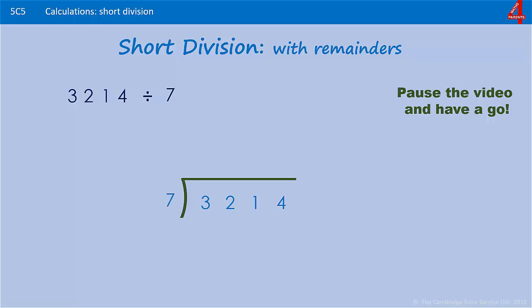3214 divided by seven. 7s into three doesn't go, we put a zero. 7s into 32: 4 lots of 7 is 28 and that leaves us with 4. 7s into 41, now this is a tricky one.